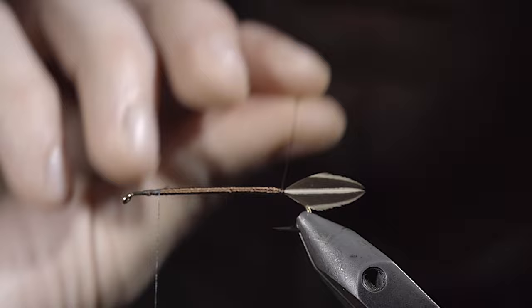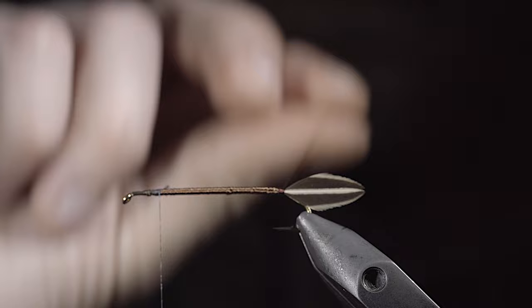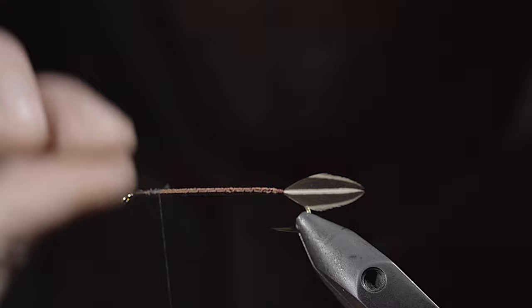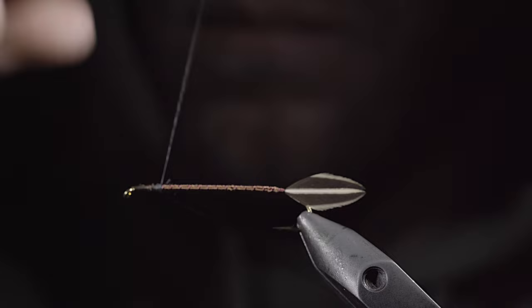Open up your wraps as we move towards the body, being careful to make sure they're evenly spaced. Continue to do so until you reach your thread, at which point we'll secure, taking thread wraps both in front as well as behind the thread, and helicoptering the excess free.